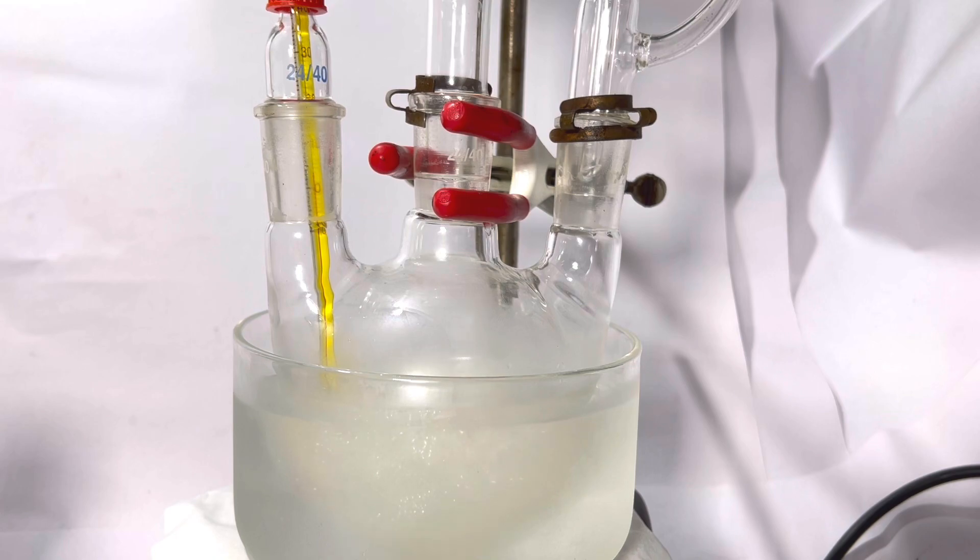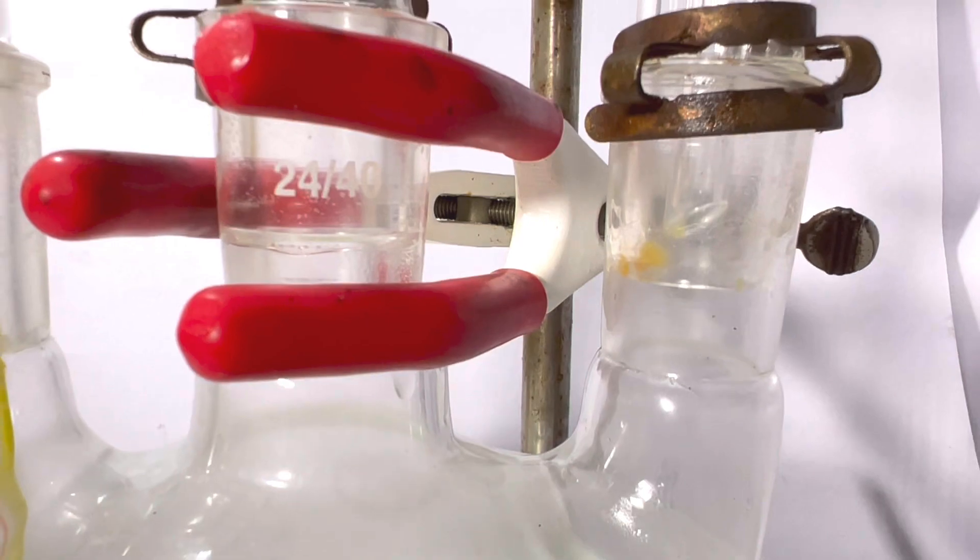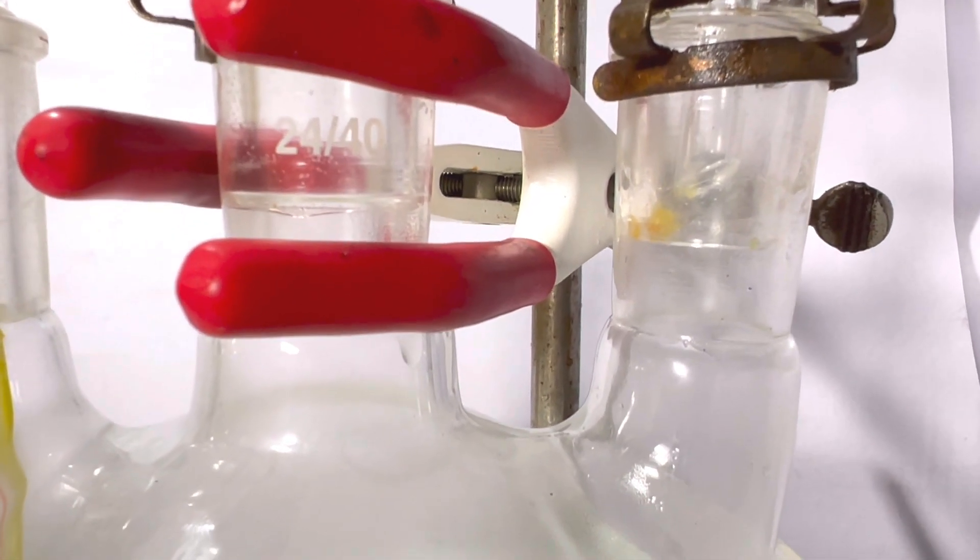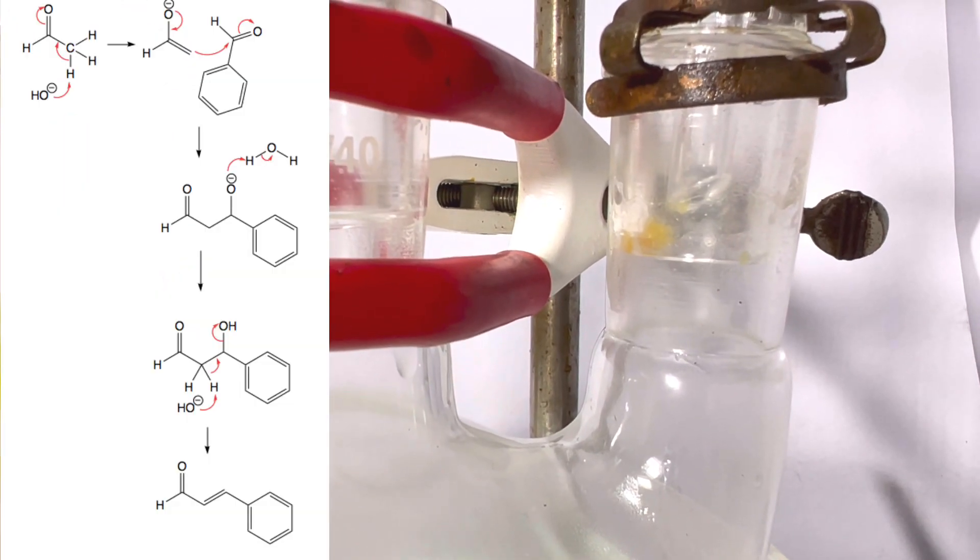Soon you will start to notice dark brown to orange color stuck inside the walls of the glassware. This is the cinnamaldehyde being formed. While the potassium hydroxide is dripping slowly, let's look into the reaction.